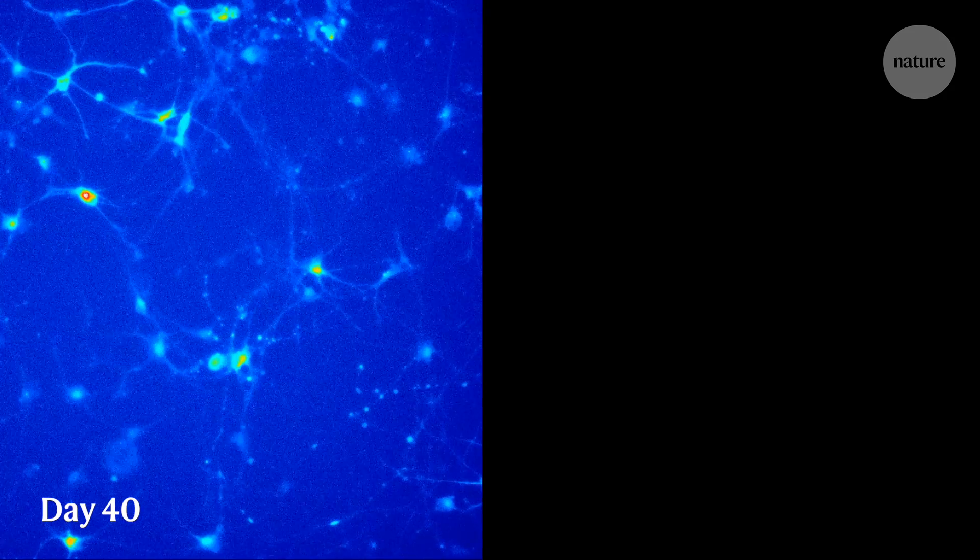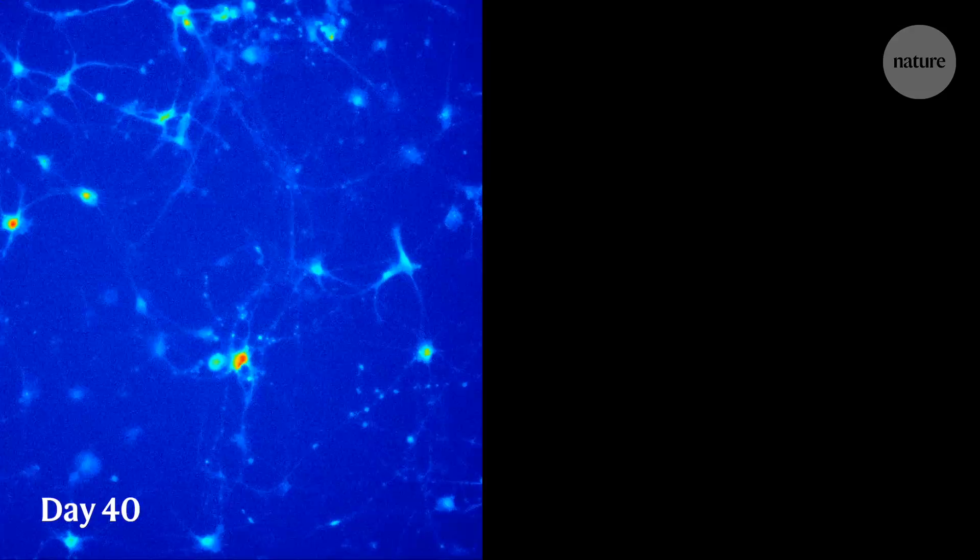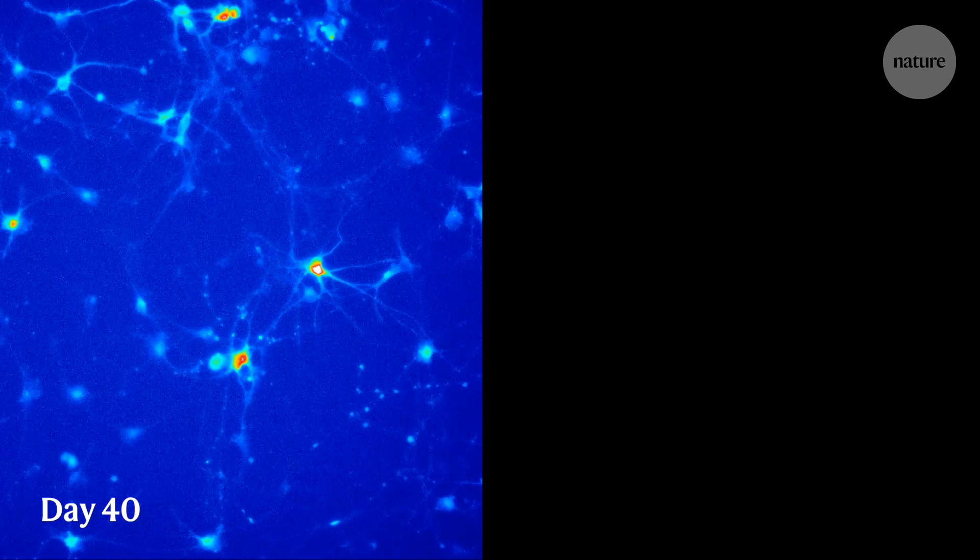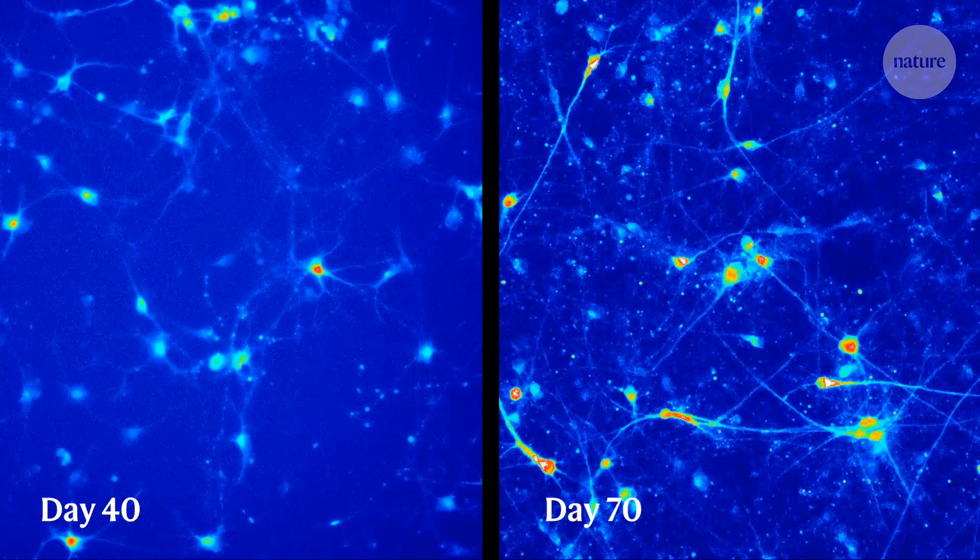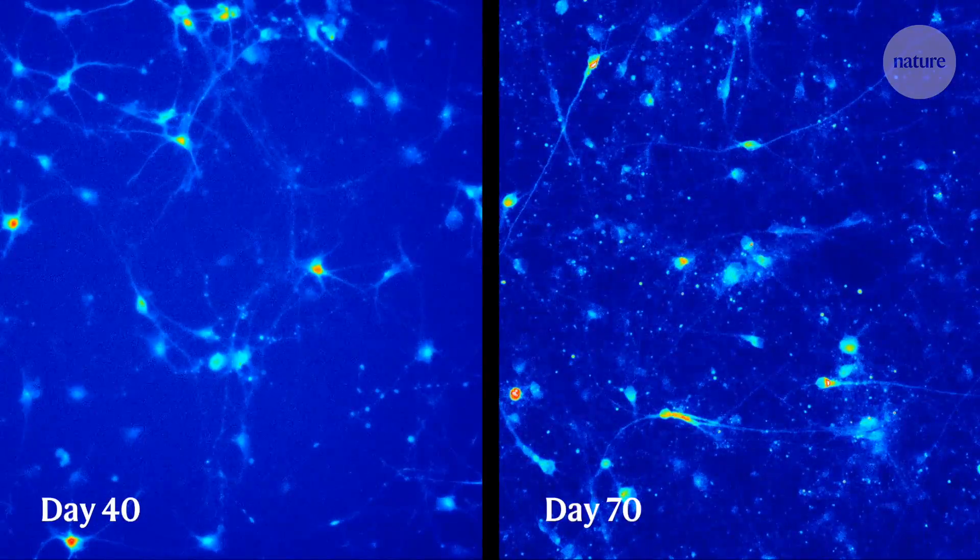Using fluorescence microscopy, they could see that as the cells matured, their electrical activity increased in intensity and frequency, and they started to fire in sync with each other.